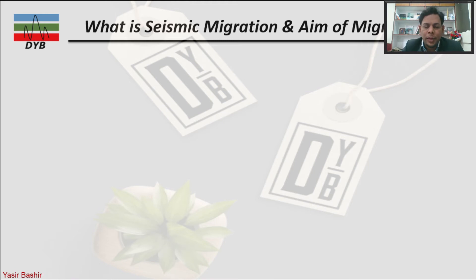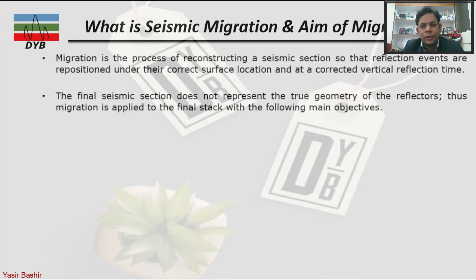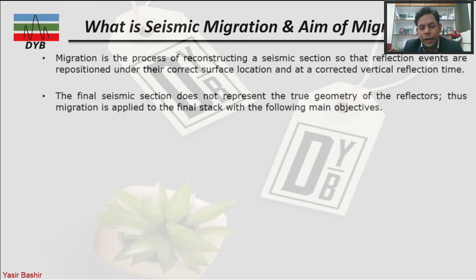Let's understand what seismic migration is and what its main goals are. Seismic migration is a process of reconstructing a seismic section so that reflected events coming from dipping reflectors or complex structures such as anticlines and synclines are repositioned under their correct surface location. The final seismic section without migration does not represent the true geometry of the reflectors.